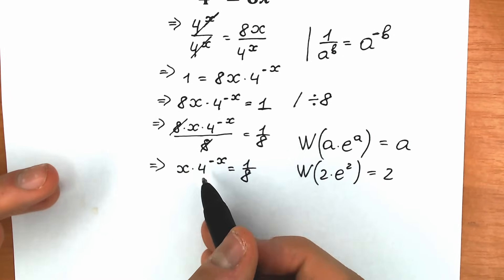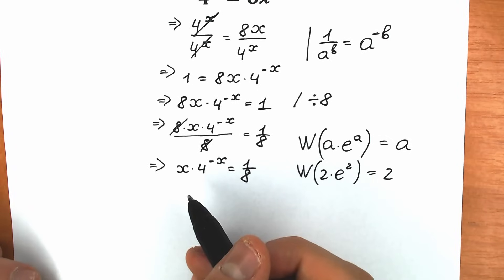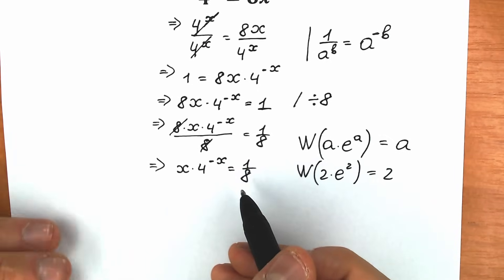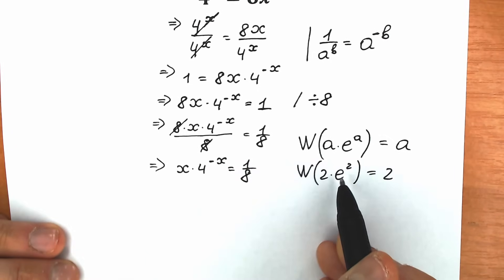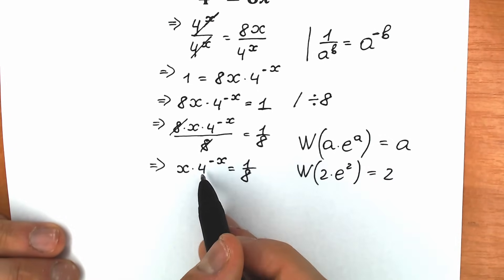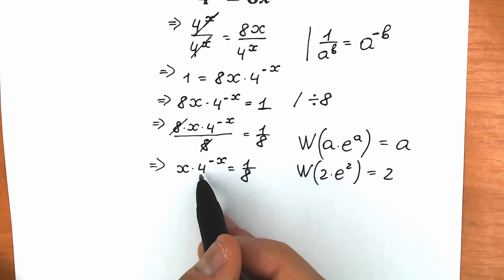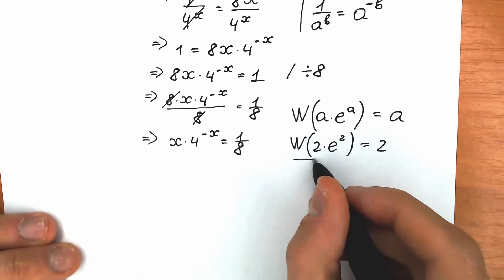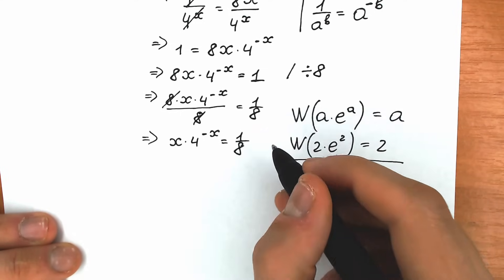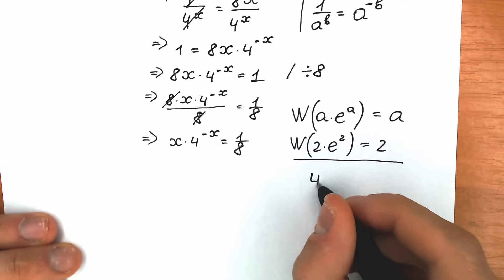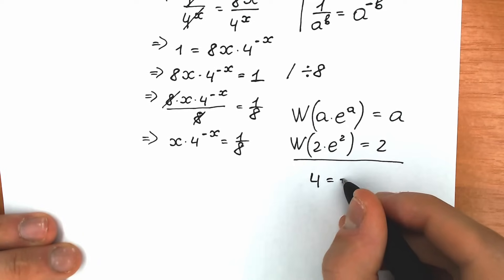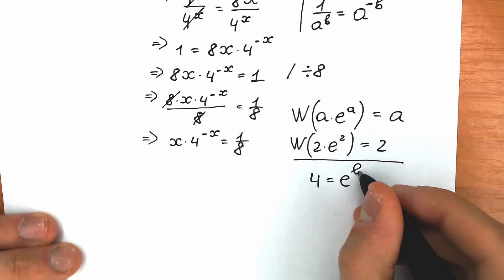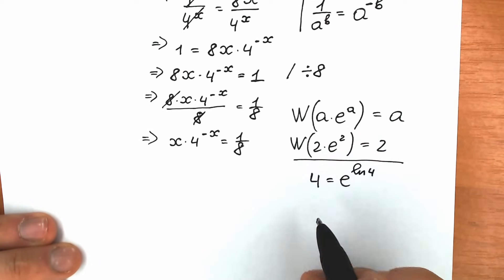We have a more complex expression — not one that's immediately ready for Lambert W. So first, let's create e. We can do this because instead of 4, we can write e to the power natural log 4. According to log properties, this is absolutely correct.